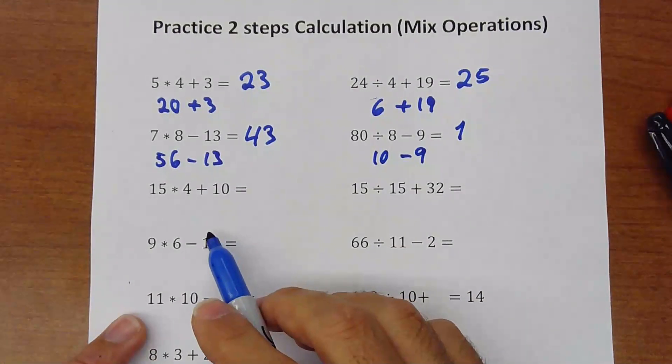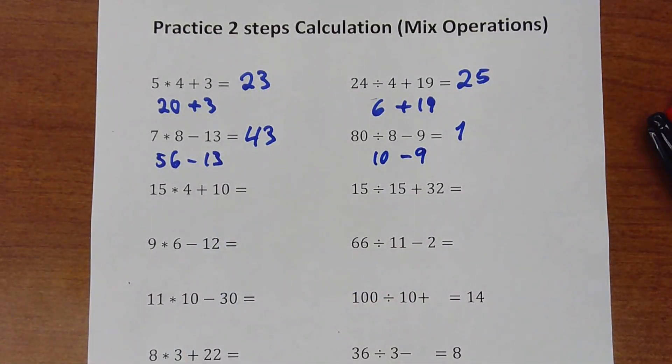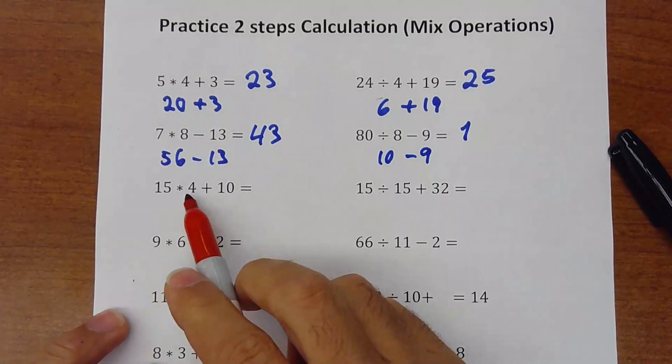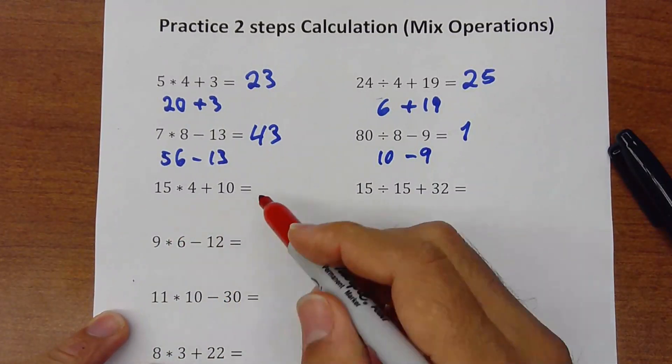Okay, now we can move on and start doing it in just one step. Sorry, two steps but just mentally. 15 times 4 is 60, plus 10 is 70.